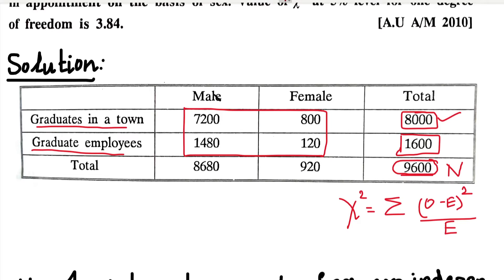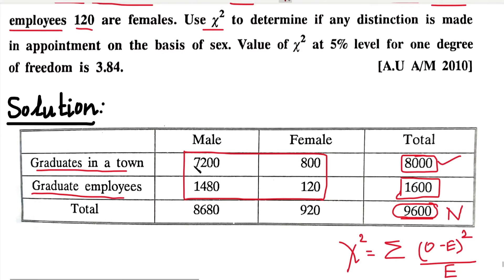We use the corresponding expected frequency values in the formula to calculate the Chi-square value. For a 2x2 matrix, we use the shortcut formula: Chi-square equals N times (AD minus BC) squared, divided by (A plus C) times (B plus D) times (A plus B) times (C plus D).